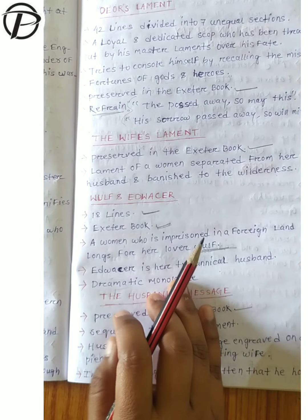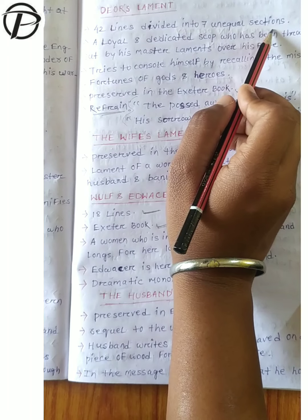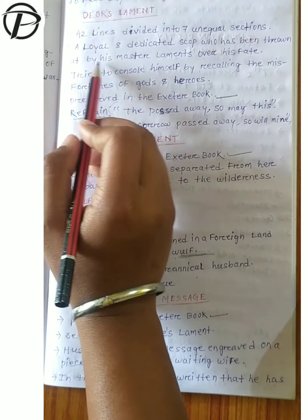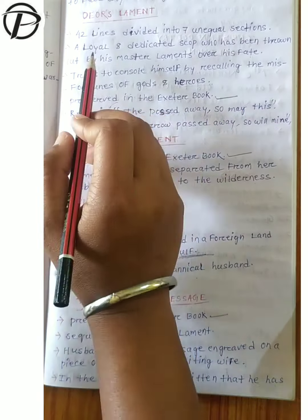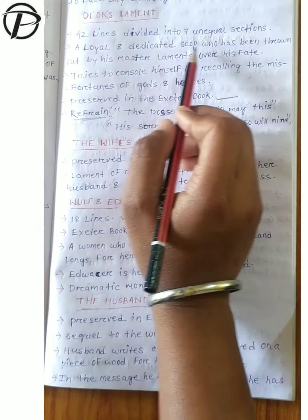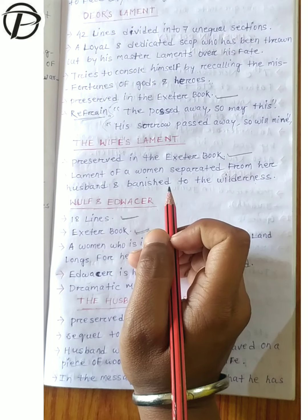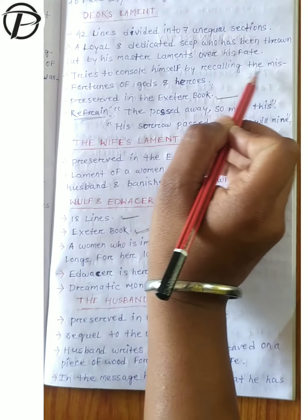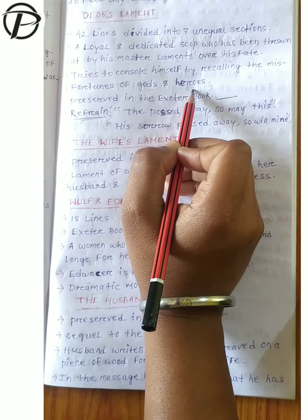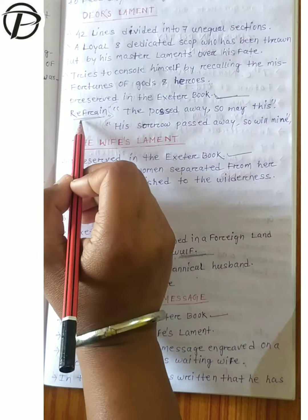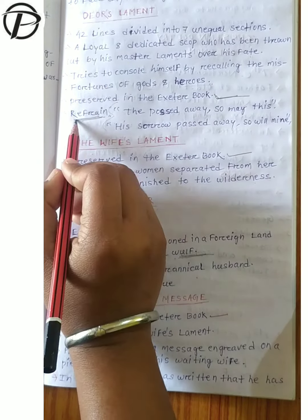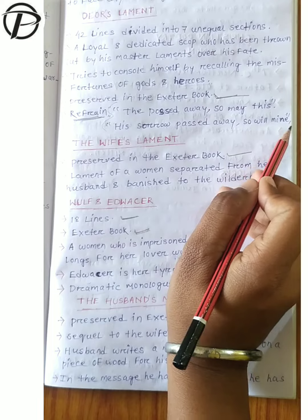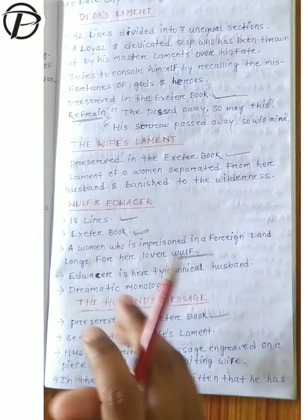Next is Deor's Lament, which is of 42 lines divided into 7 unequal sections. A loyal and dedicated scop who has been thrown out by his master laments over his fate. He tries to console himself by recalling the misfortunes of gods and heroes. It is preserved in the Exeter Book and ends with the refrain: 'That passed away, so may this - his sorrow passed away, so will mine.'